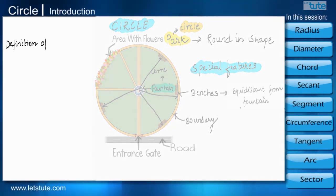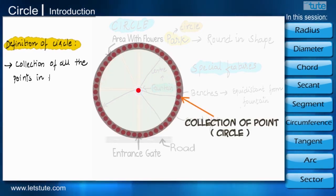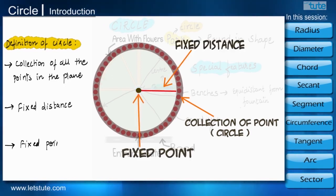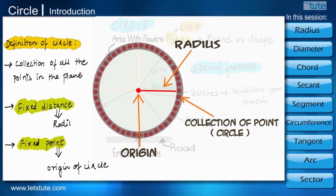Mathematical definition of circle is also on the same lines. A circle can be defined as the collection of all the points in a plane which are at a fixed distance from a fixed point in the plane.